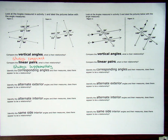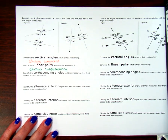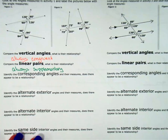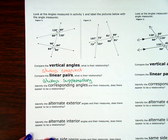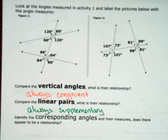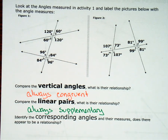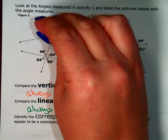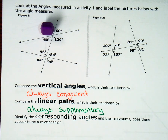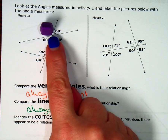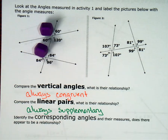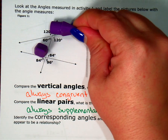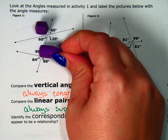Now it says to compare my corresponding angles — I'll zoom in so we can see them better. Corresponding angles means they are in the same position at different intersections. For example, this 120-degree angle at the top intersection — the corresponding angle is at the bottom intersection in the same top-left position, which is 96. So those are my corresponding angles: one is 120, the other is 96.